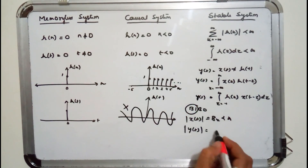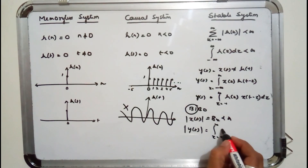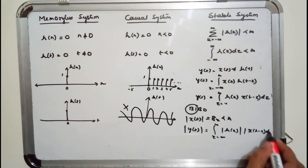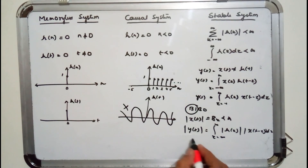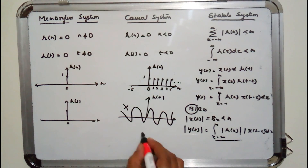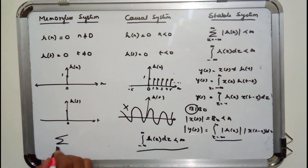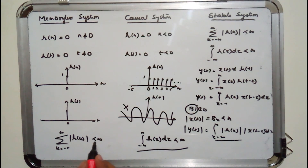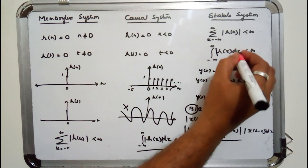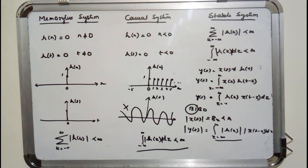Taking the magnitude of y(t), since x(t) is bounded, we can write the magnitude as the integral from minus infinity to infinity of |h(τ)| · |x(t−τ)| dτ. Since the input is bounded, the condition for the output to be bounded — for a stable system — is that the integral of |h(τ)| dτ from minus infinity to infinity must be less than infinity. For discrete time, the sum of |h[k]| from minus infinity to infinity must also be less than infinity. If the impulse response is absolutely summable or absolutely integrable, then the system is stable.